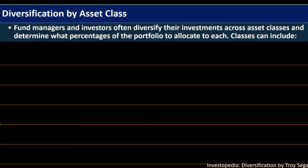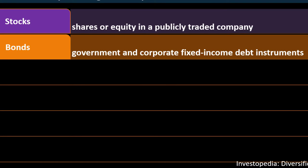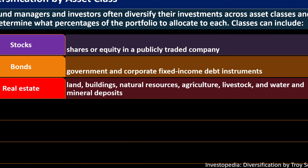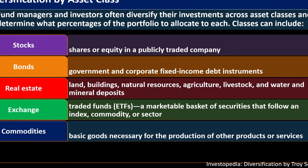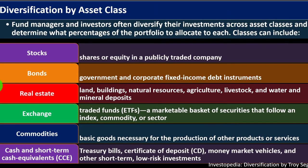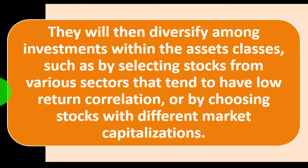Diversification by asset class: fund managers and investors often diversify their investments across asset classes and determine what percentage of the portfolio to allocate to each. Classes can include: stocks (shares of equity in a publicly traded company), bonds (government and corporate fixed-income debt instruments), real estate (land, buildings), natural resources (agriculture, livestock, water, mineral deposits), exchange-traded funds (ETFs — marketable baskets of securities that follow an index, commodity, or sector), and commodities (basic goods necessary for the production of other products).